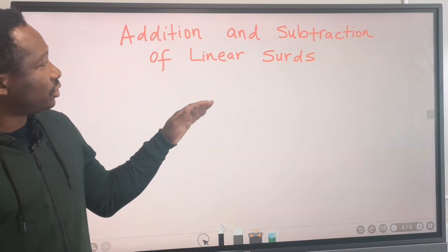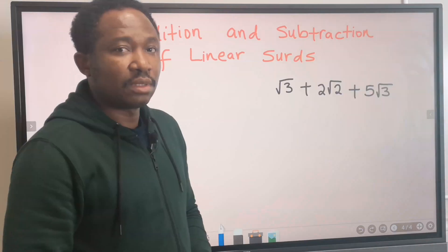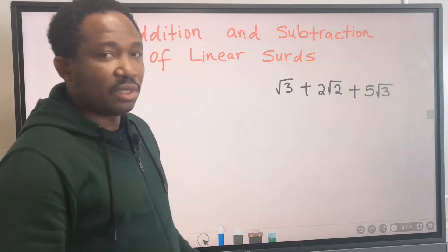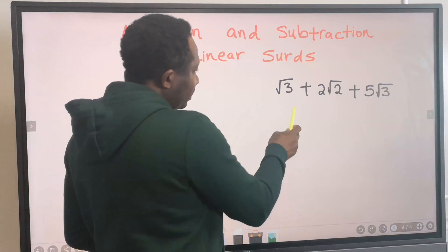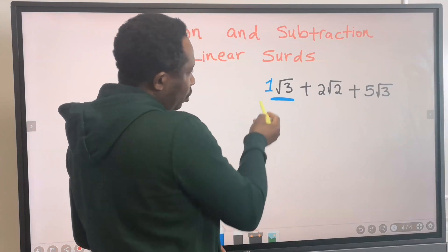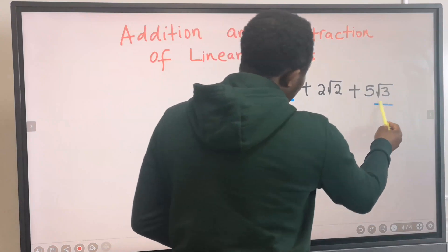Let's consider the addition and subtraction of linear surds. Let's add these surds. You can see that this is root 3 and it is 1 root 3. We don't usually write the 1. This is root 3 here.